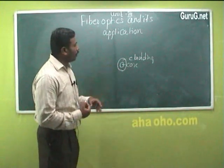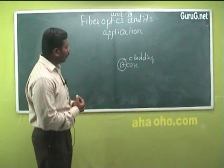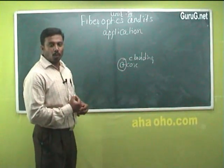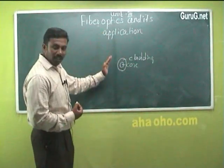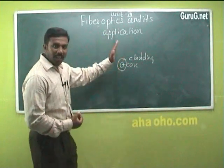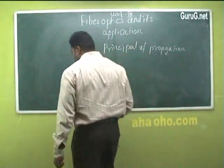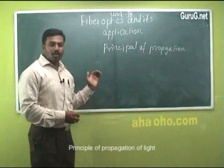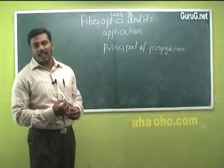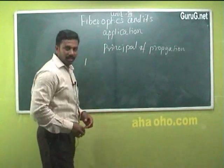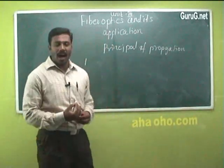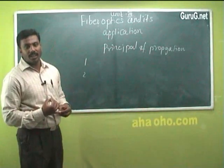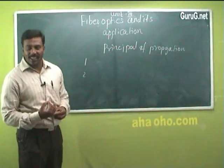So let us see how to propagate light inside the optical fiber. The principle of propagation of light inside the optical fiber is total internal reflection. Only when total internal reflection takes place can the light waves be transmitted inside the optical fiber. For light waves to get transmitted inside the optical fiber, it has to satisfy two conditions: one is that the refractive index of the core should be high compared to that of the cladding, and next, the angle of incidence should be greater than the critical angle.